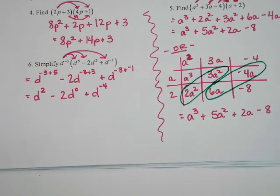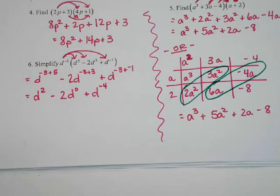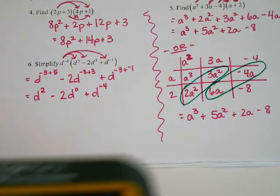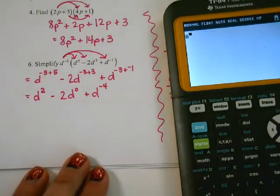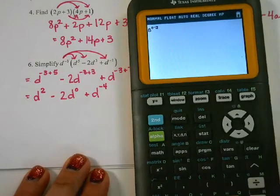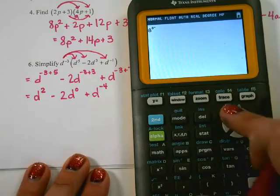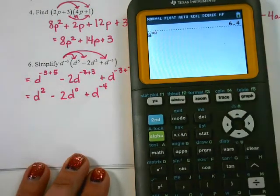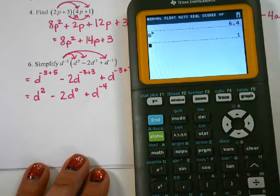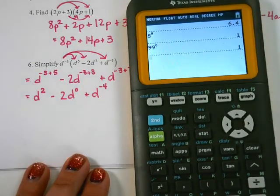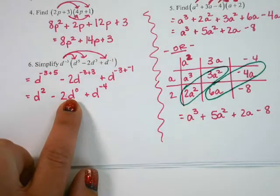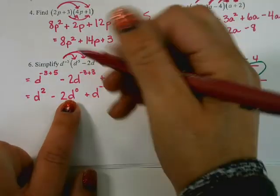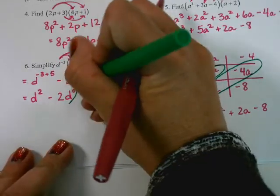Now we still have a few things to fix. d to the 0 — what happens when I raise something to a 0 exponent? We always get 1. Let's try it in the calculator: 8 to the 0 power is 1, 99 to the 0 power is 1. Anytime you raise a number or variable to a 0 power, you get 1.